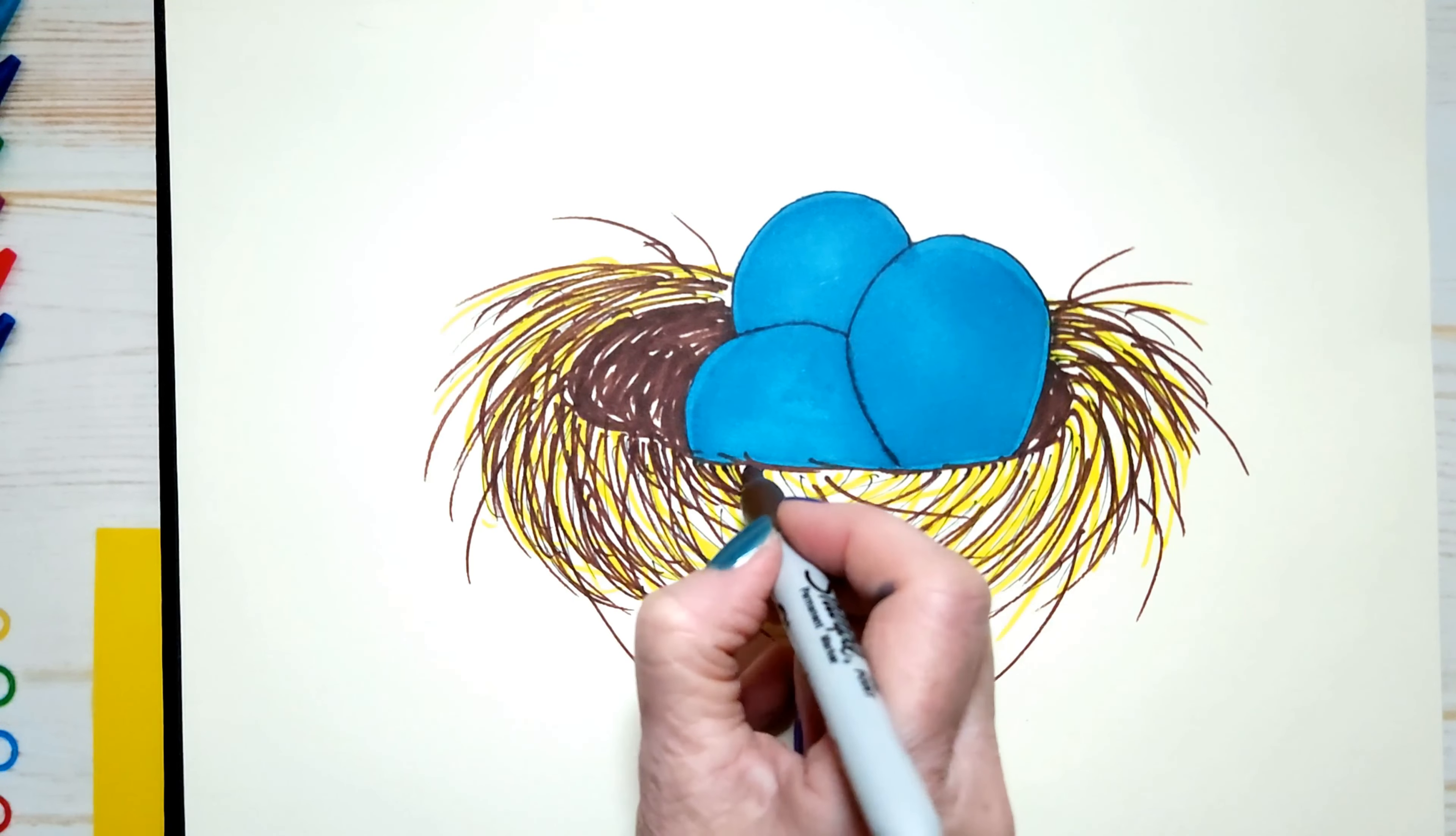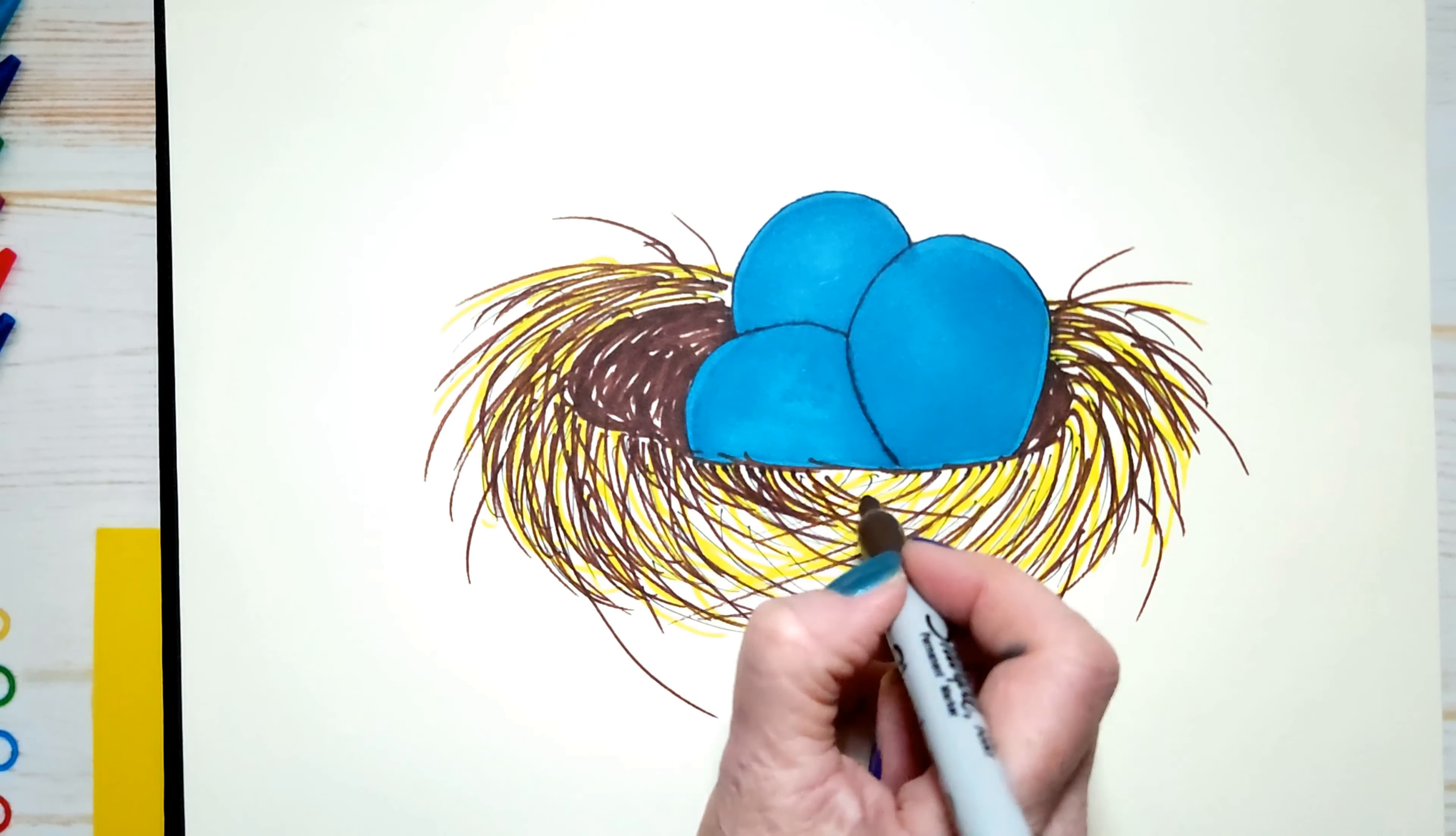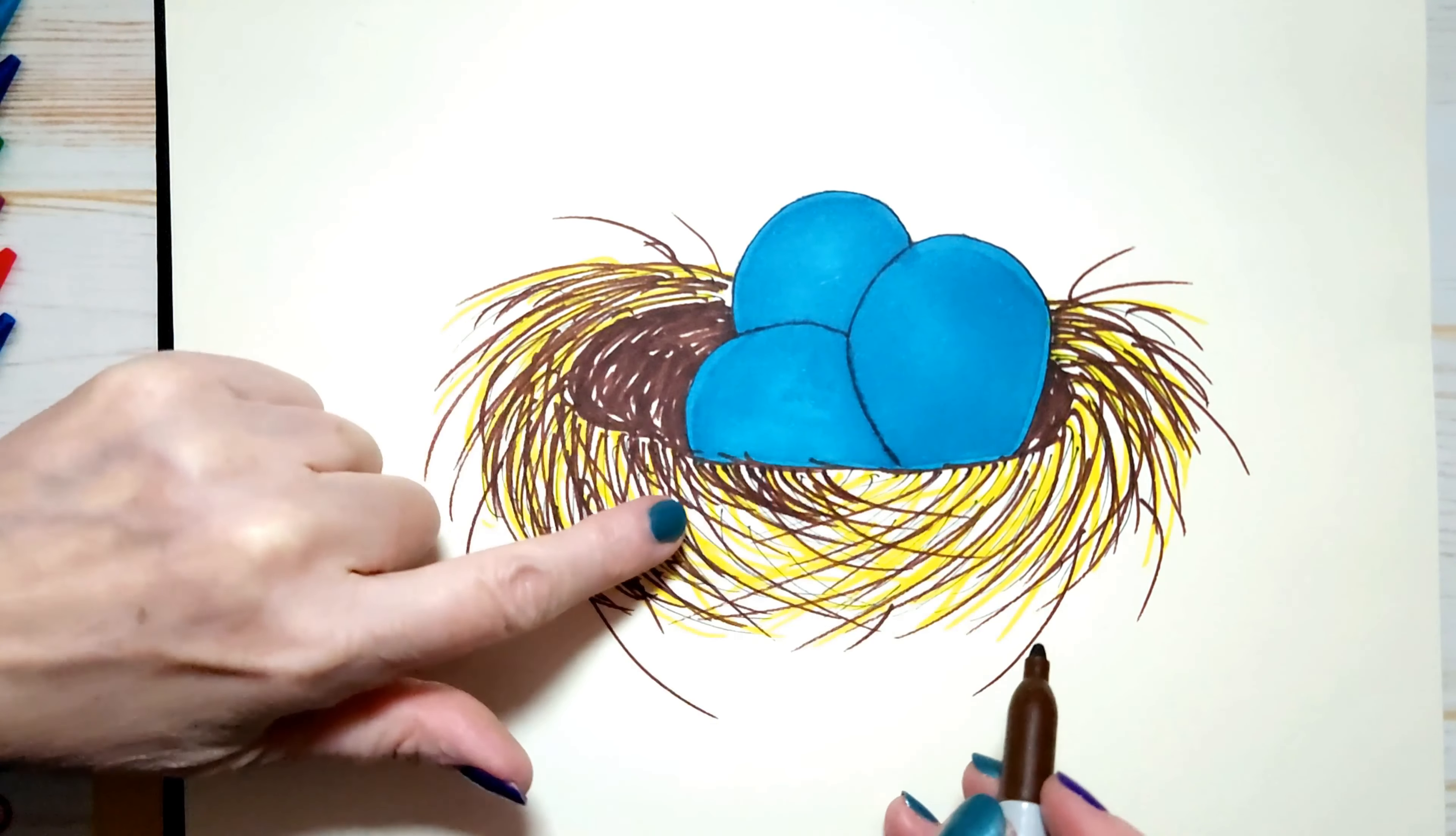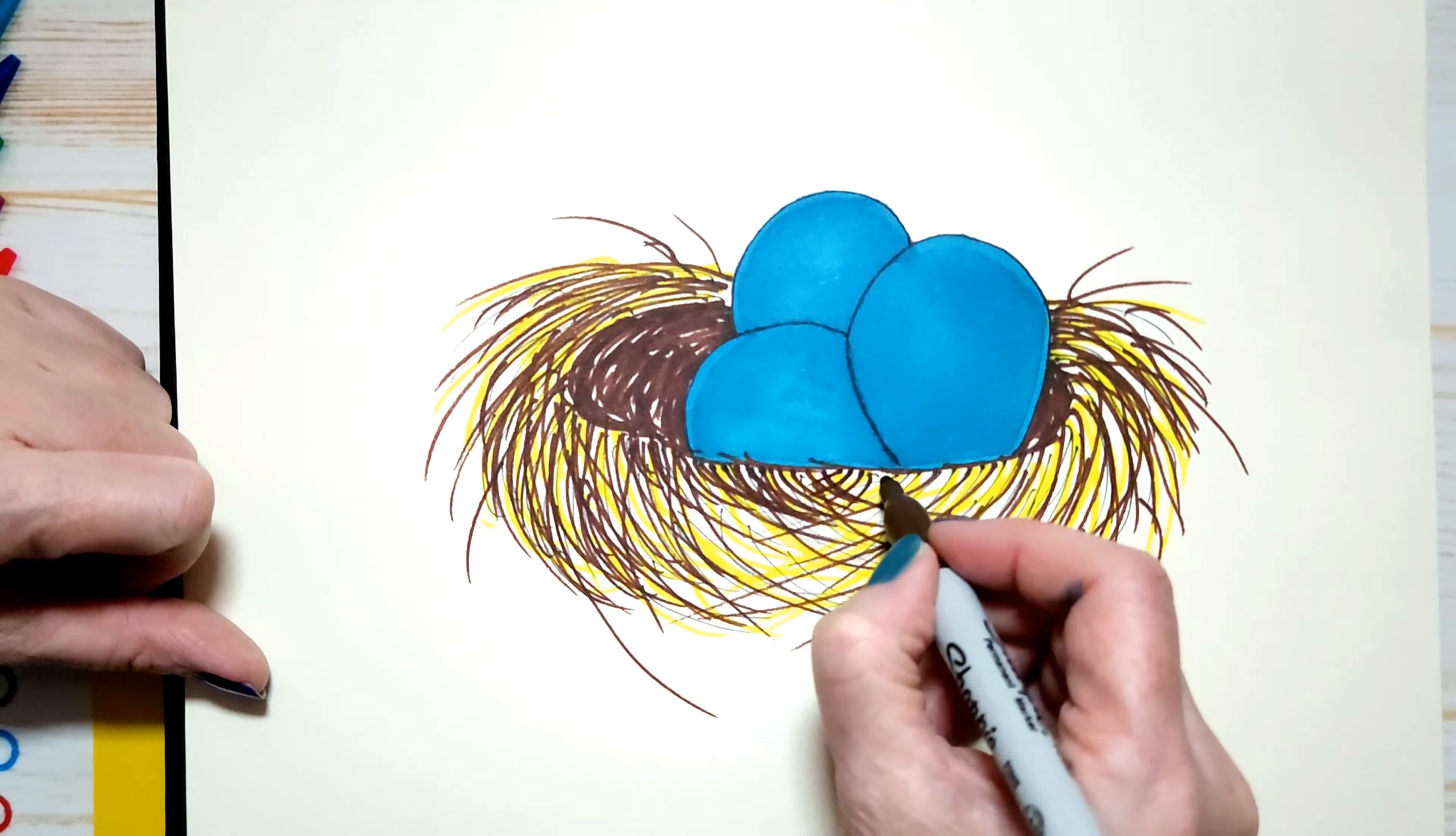And when I get to the middle, I switch the other way. Because when you do that, this is called contour drawing or contour shading. In this case, we're drawing, we're not shading.